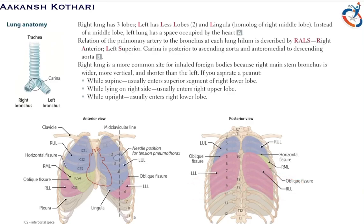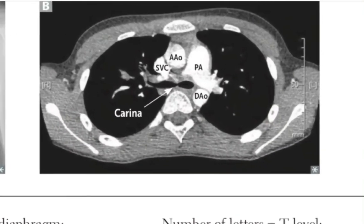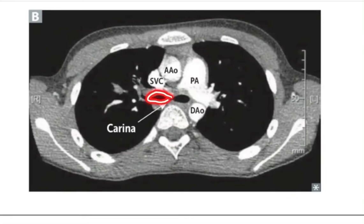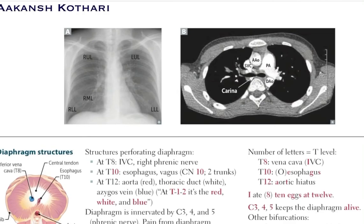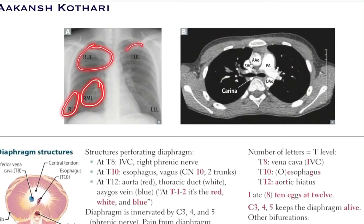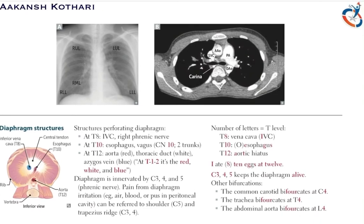On CT scan, the bifurcation of the trachea — the carina — is highlighted. The ascending aorta is anterior, confirming the carina is posterior to the ascending aorta and anteromedial to the descending aorta. On chest X-ray, the right lung shows the right upper, middle, and lower lobes, while the left lung shows the left upper and lower lobes.